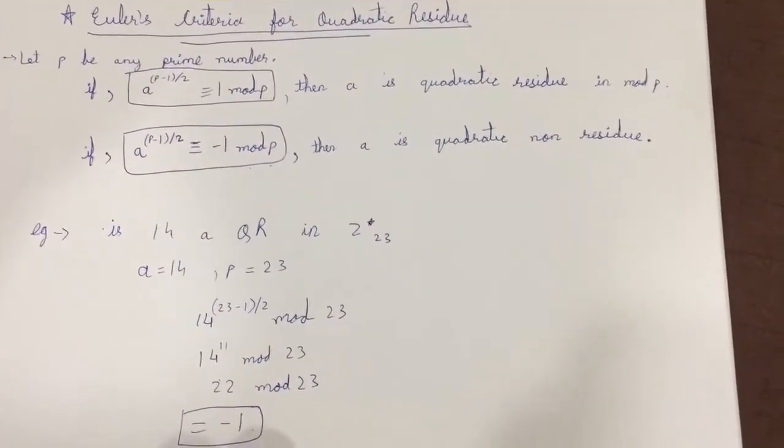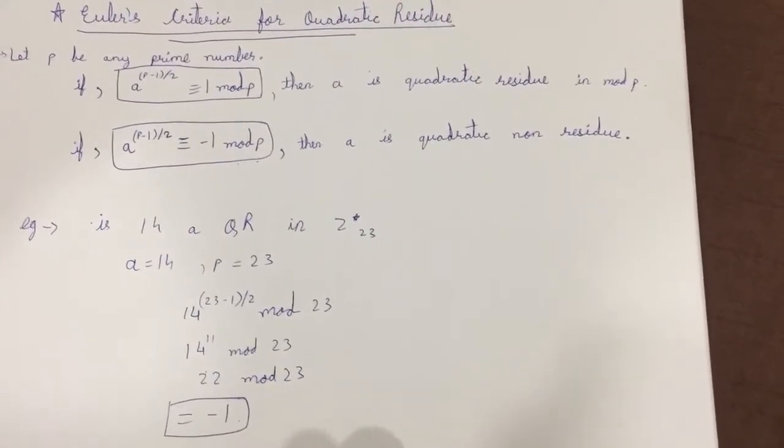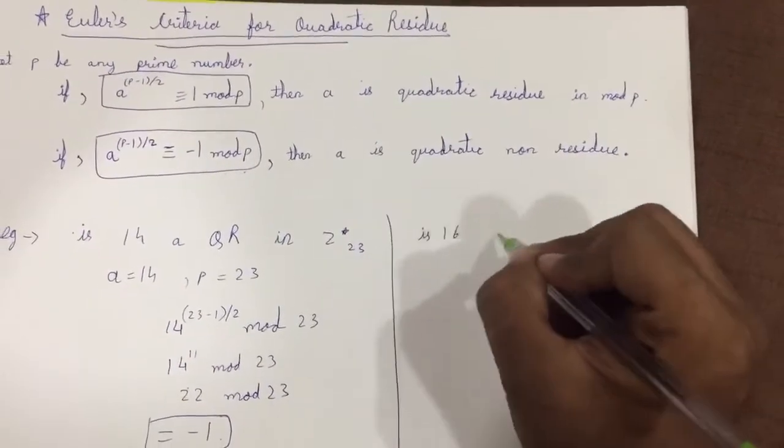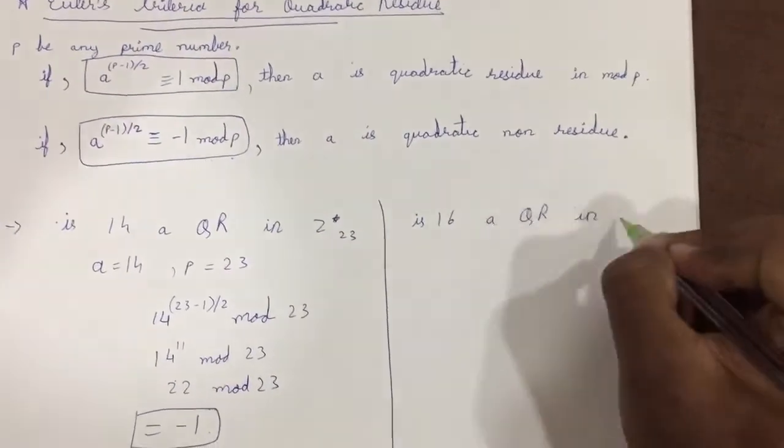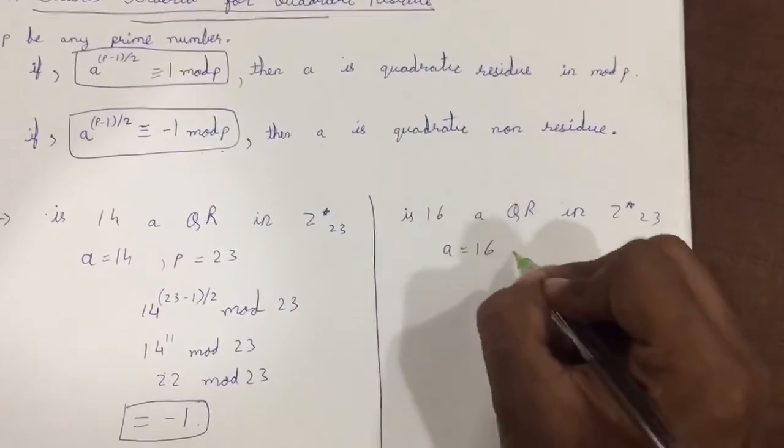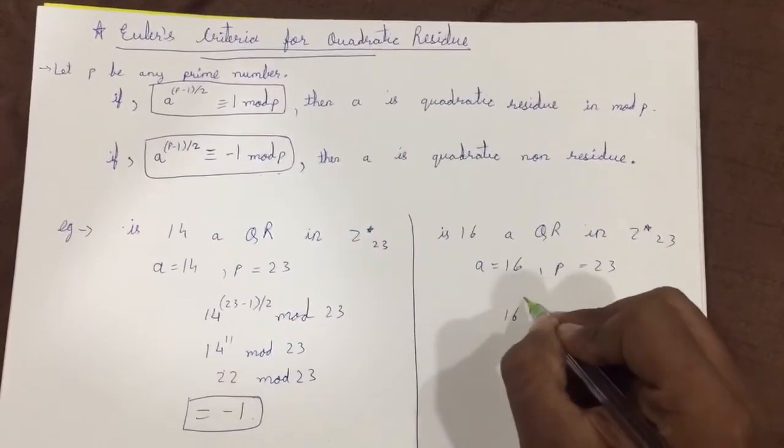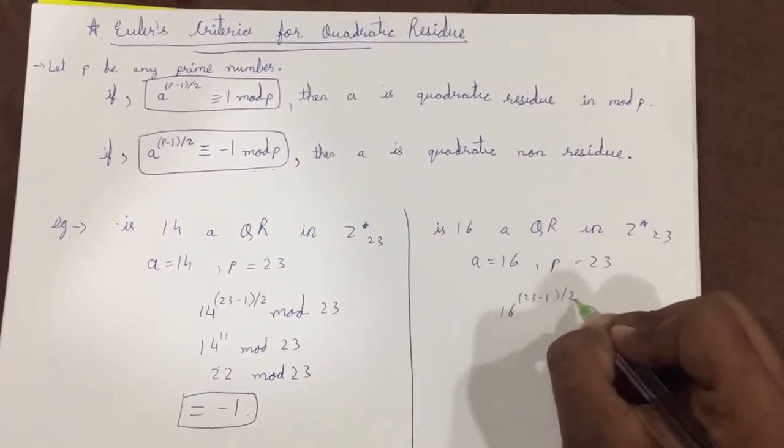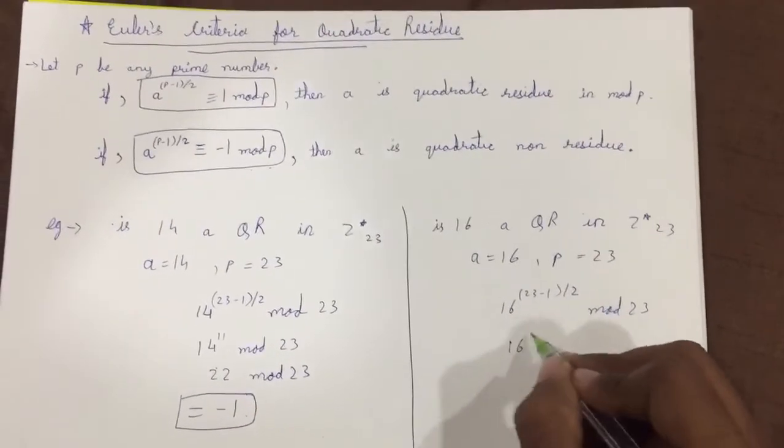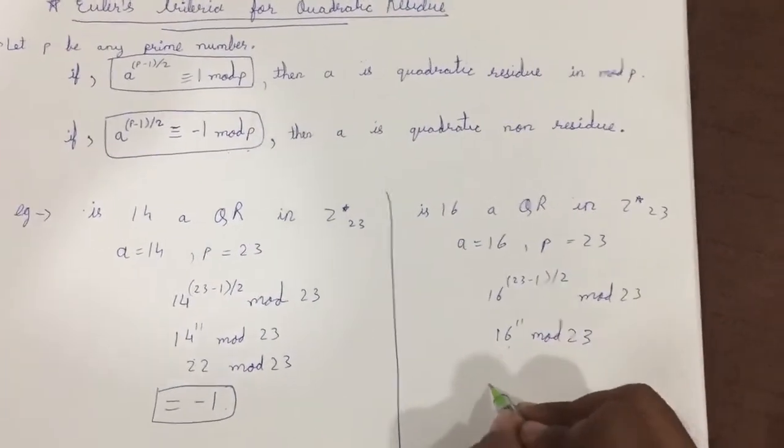Now let us check: is 16 a quadratic residue in Z star 23? So a here will be 16, p here again 23, so 16 raise to 23 minus 1 divided by 2 mod 23 which is equal to 16 raise to 11 mod 23.